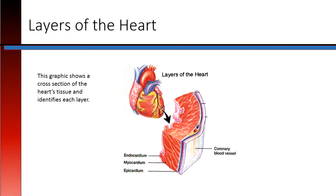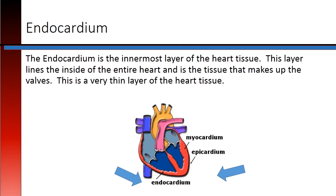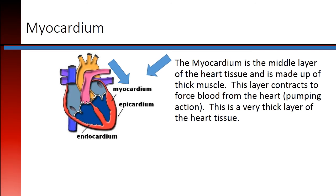This graphic shows a cross-section of the heart's tissue and identifies each layer. The endocardium is the innermost layer of the heart tissue. This layer lines the inside of the entire heart and is the tissue that makes up the valves. This is a very thin layer of heart tissue.